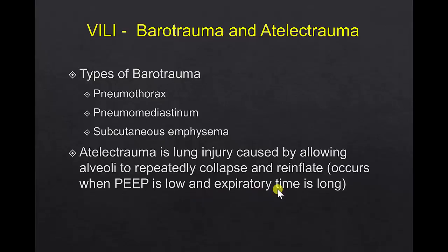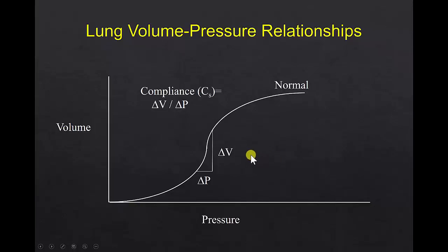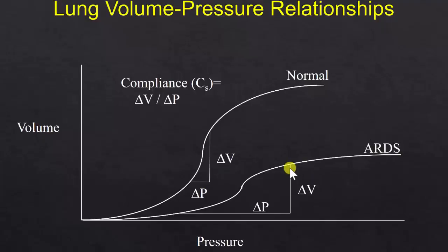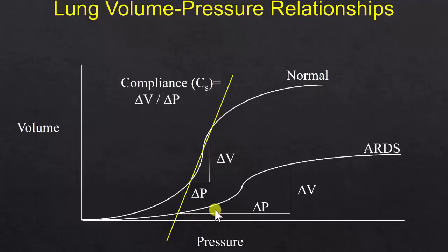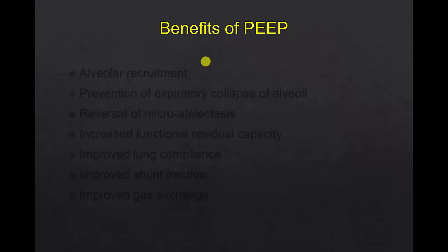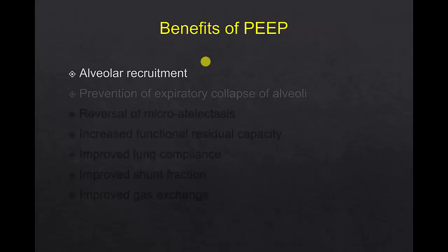Here's a graph of the volume-pressure relationship of a healthy lung. In a healthy lung, we achieve a relatively normal tidal volume with a small pressure. In ARDS, with a stiff lung, in order to deliver a regular-sized tidal volume we need a high pressure. The slope of this graph, delta V over delta P, is the measure of compliance. A high slope or high compliance means healthy lungs, and a low slope or low compliance means stiff ARDS-type lungs.